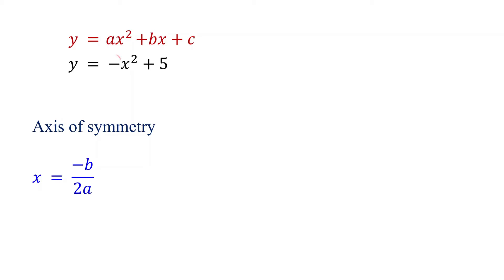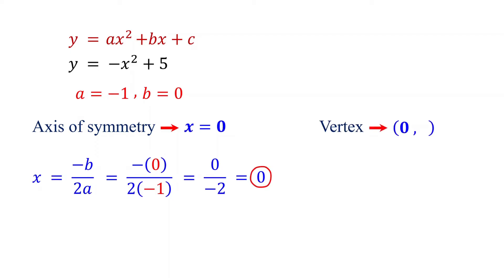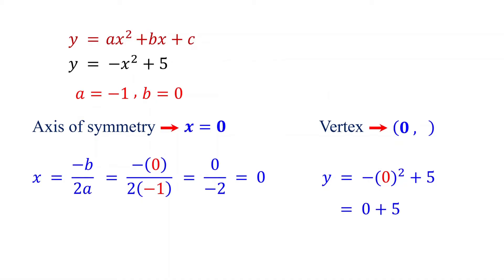For this function, a is negative 1. Notice that the x term is missing, which means the coefficient b is 0. Substituting these values into the formula gives us 0. Therefore, the axis of symmetry is the line x equals 0. Since the vertex lies on the axis of symmetry, this is its x-coordinate. Substituting 0 for x into the original function gives us 5. Therefore, the vertex is the point 0 comma 5.